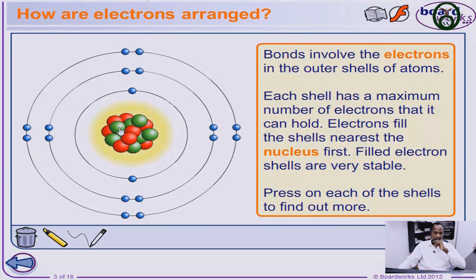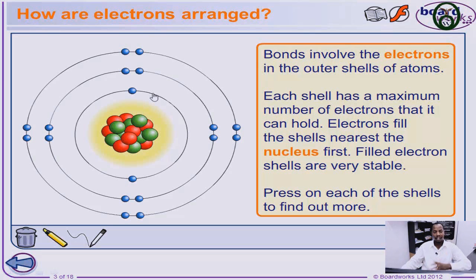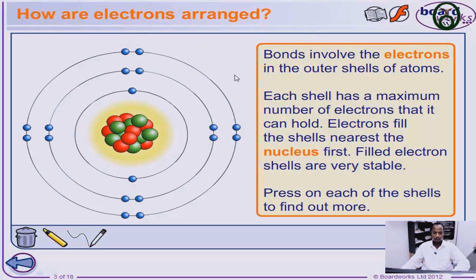We said the electrons revolve around the shell. The shell that is closest to the nucleus is filled first. In the arrangement, the electrons are arranged based on certain rules. The maximum number of electrons in the outermost shell would be 8 and the innermost is 2, with the formula 2n squared. So if n is 1, you say 2 times 1 squared. 1 squared is 1, times 2 is 2. So the maximum number of electrons in the first shell, which is closest to the nucleus, is 2.